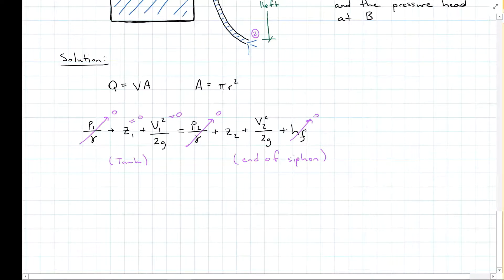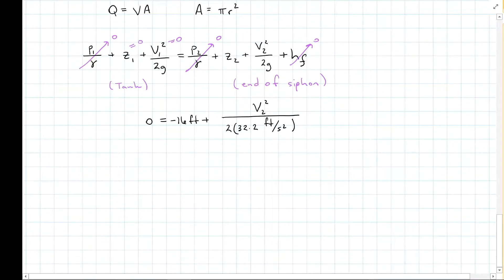And velocity 1, we have a standing water tank, so my velocity is equal to 0. So that means I am left with the elevation change to the end of the siphon and then the velocity coming out of the siphon, which is what I'm looking for. So plugging in my known values, I have negative 16 feet from my datum to the bottom of the siphon plus V2 squared, which is what we're looking for, divided by 2 times gravity. We're in US units, so I'm using 32.2 feet per second squared. Solving for velocity, I get 32.1 feet per second.